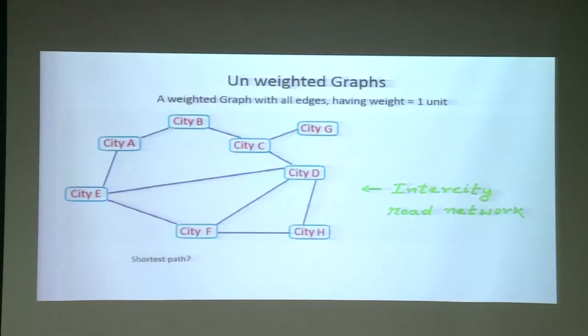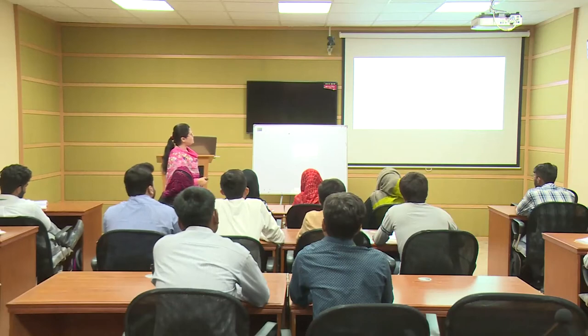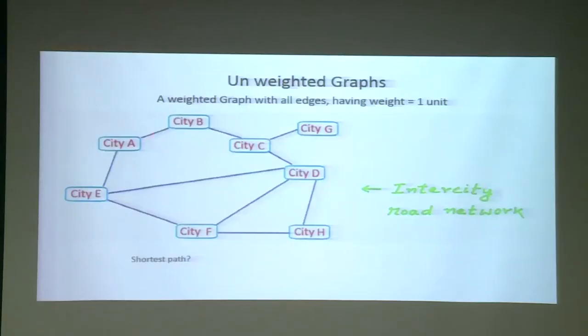Weighted and unweighted graphs are very important terminology. In an unweighted graph, the edges are unlabeled — there are no values for edges. We consider them 1 unit, so all edges contain a value of 1, meaning all have equal and constant values.